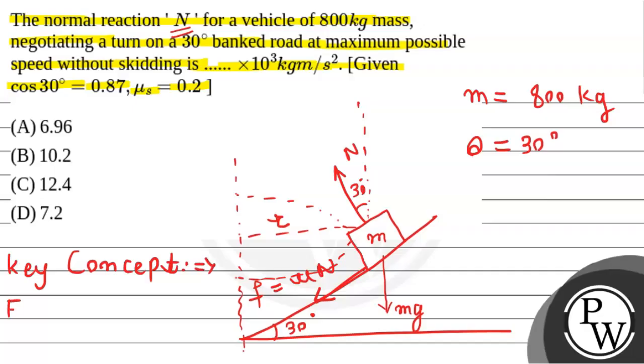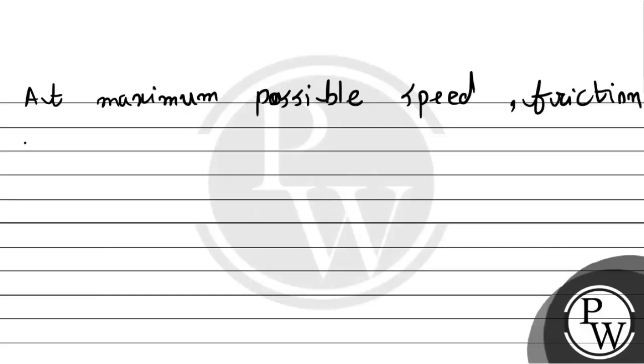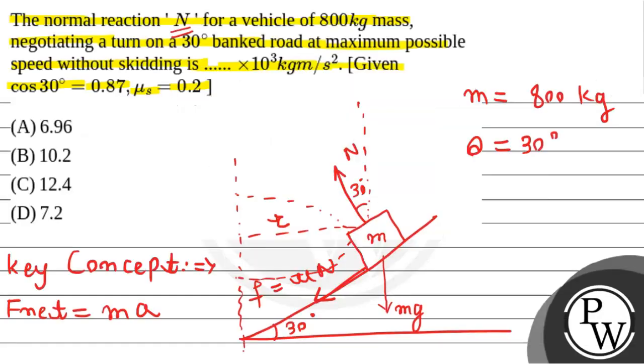The key concept I am using is the net force from Newton's second law of motion. The net force equals mass times acceleration. First of all, if we talk about maximum possible speed, we remember that at maximum possible speed, friction will be limiting in nature. According to this, if we balance the forces in vertical direction, we have forces N and mg.